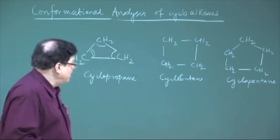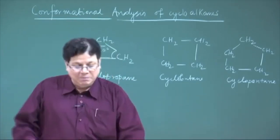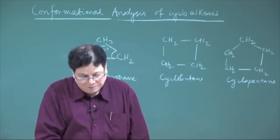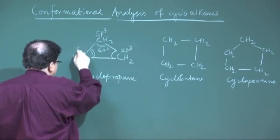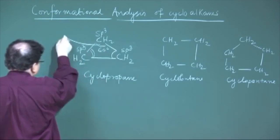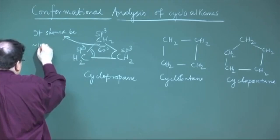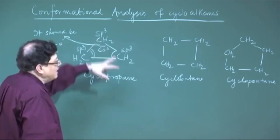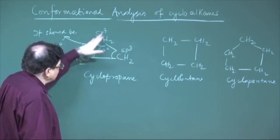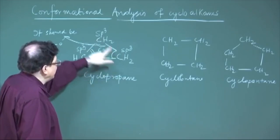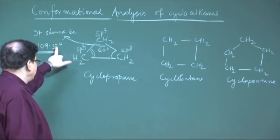In cyclopropane, if we treat it as a mechanical system where the bonds are straight lines, the angle is 60 degrees. The sp3 hybridization of carbon demands an angle of 109.5 degrees, but this cannot be maintained when forming the ring. So the angle is only 60 degrees, and this molecule will suffer from angle strain because the normal valency angle cannot be maintained.